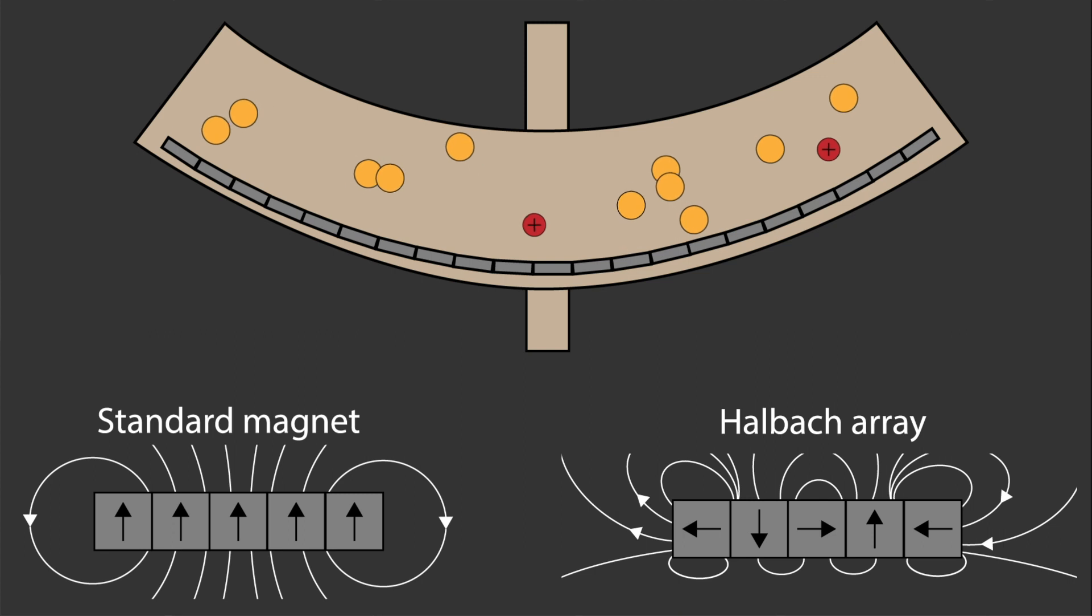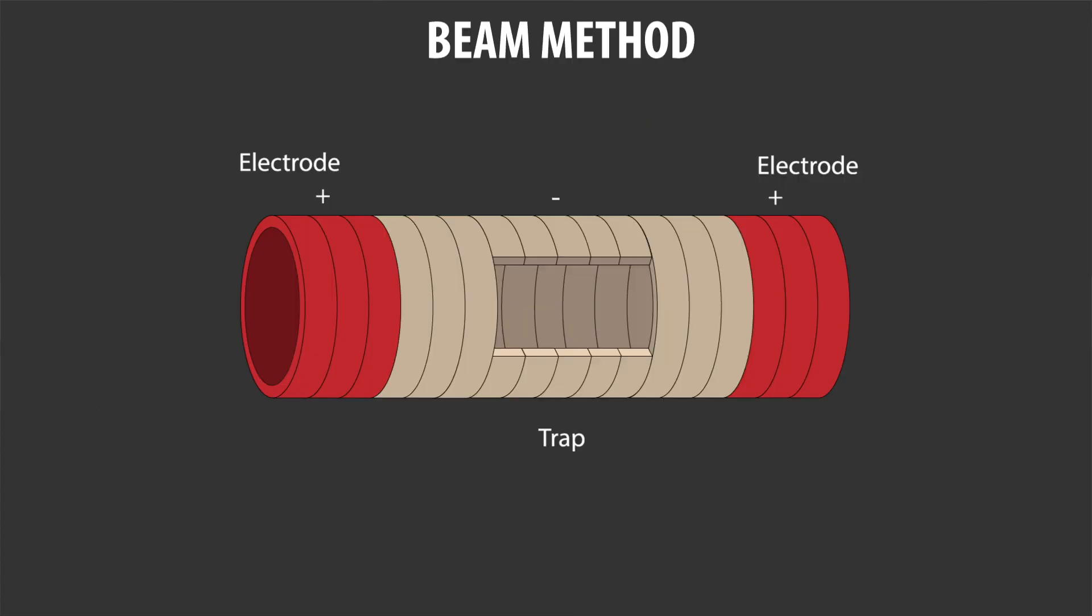After the bottle is loaded with neutrons, the scientists wait for some time and then count the number of neutrons left in the bottle. In this way they can determine the lifetime of the neutrons.